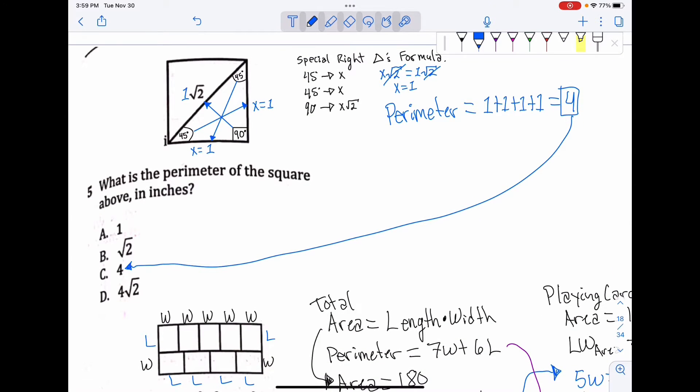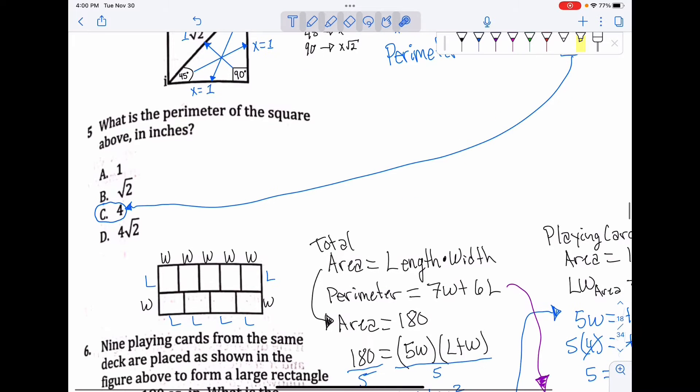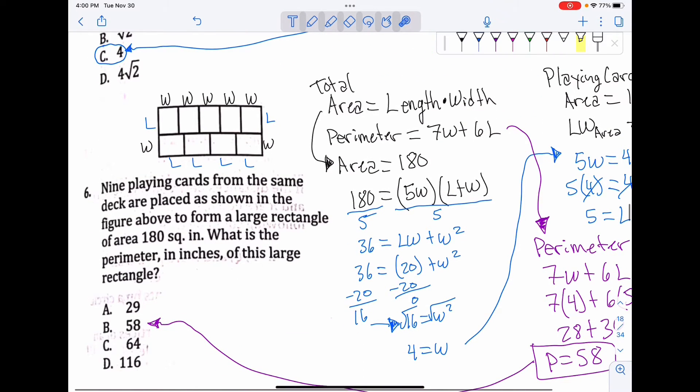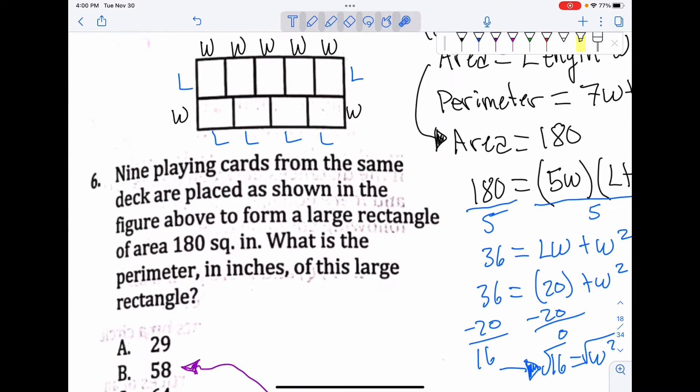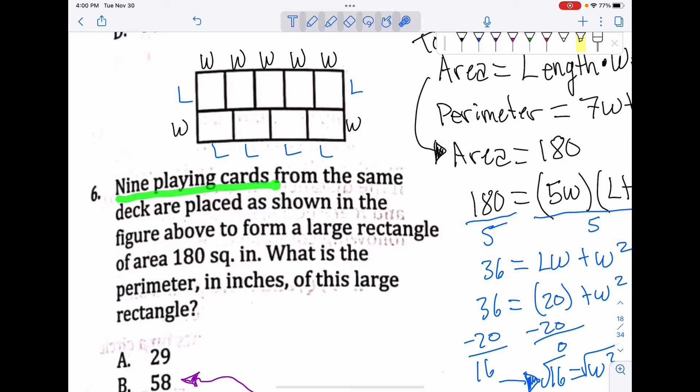All right, now the next one. It's a bit complicated, but we'll see if you can break it down. We have nine playing cards from the same deck placed as shown in the figure to form a large rectangle of area 180 square inches. What is the perimeter in inches of this large rectangle?